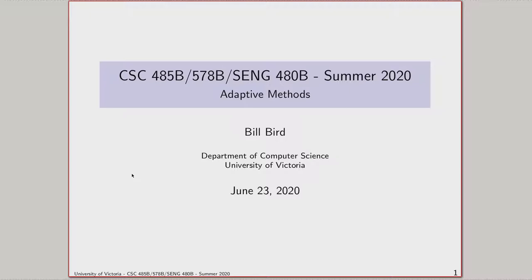Once you've devised a Huffman code, encoding is really easy — you just take each symbol and look it up in a table. Huffman coding is extremely fast in practice because all it requires is indirection, looking stuff up in an array which usually ends up in the cache. Arithmetic coding, by contrast, requires looking up tables, doing arithmetic, shift operations, and potentially multiple shifts per iteration, which adds up to make it somewhat slower.